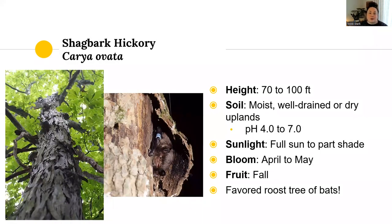Shagbark hickory is also a really interesting choice. They are wonderful for wildlife and a big tree at 70 to 100 feet high. They have a wide tolerance of different soil types from moist to dry uplands, so you could plant them close to the stream or further back. They prefer a pH between 4.0 and 7.0 — that's a pretty wide range. Full sun to part shade, blooming April to May with nuts fruiting in the fall. They are a favored roost tree of bats because of that peeling bark that makes little crevices, so if you're into wildlife and like bats to control insects, shagbark hickory would be a great choice.